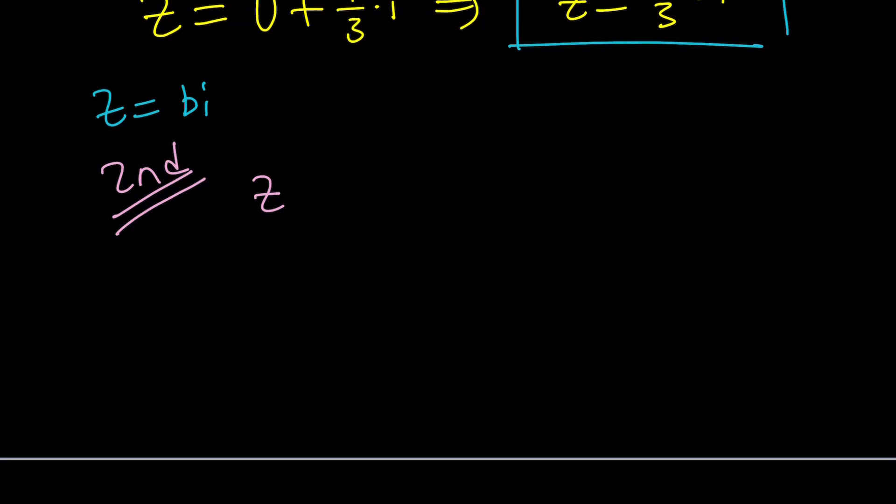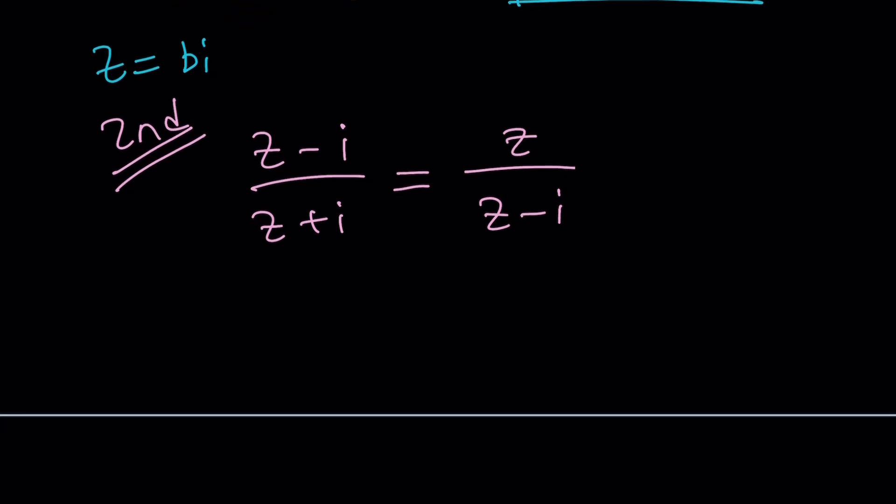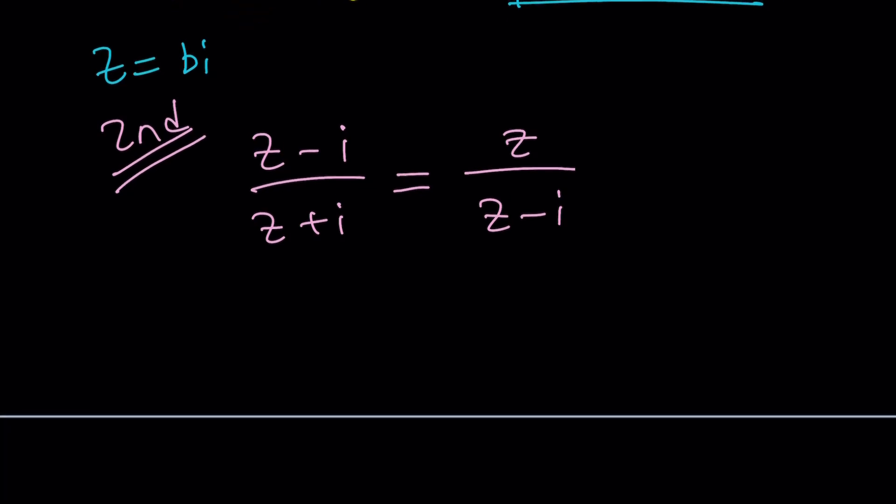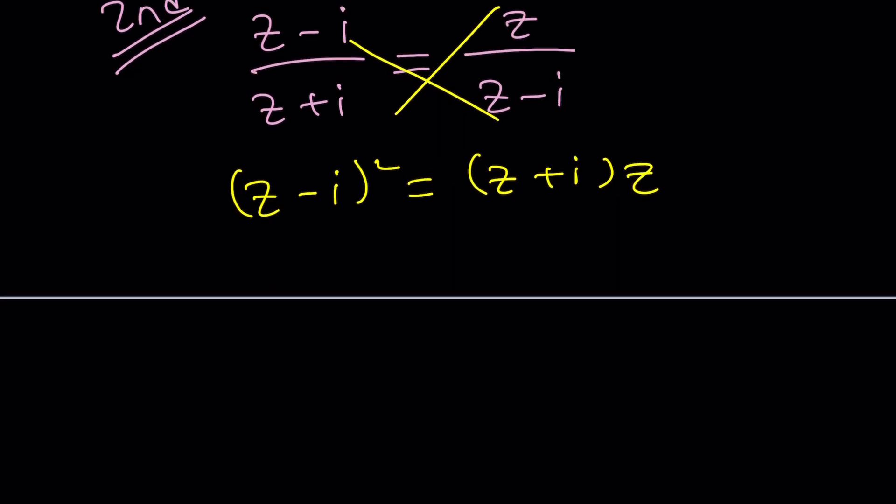All right, let's take a look at the second method now and see how it differs from the first. Again, I'm going to write the original problem. z minus i divided by z plus i equals z over z minus i. What am I going to do for my second method? I don't need to replace z with a plus bi. I'm just going to multiply. So this is z minus i squared equals z plus i multiplied by z.